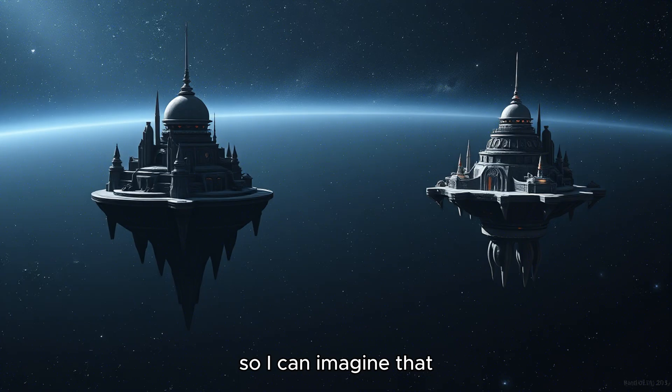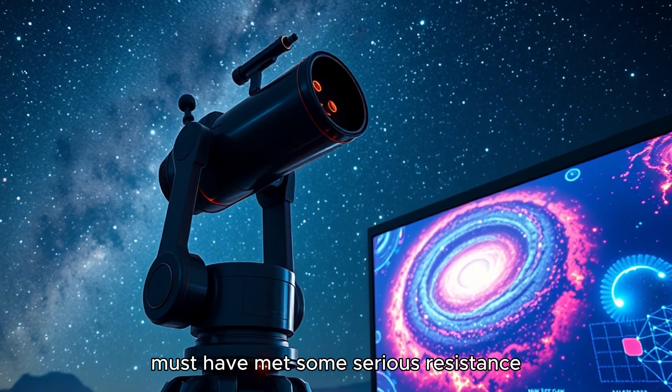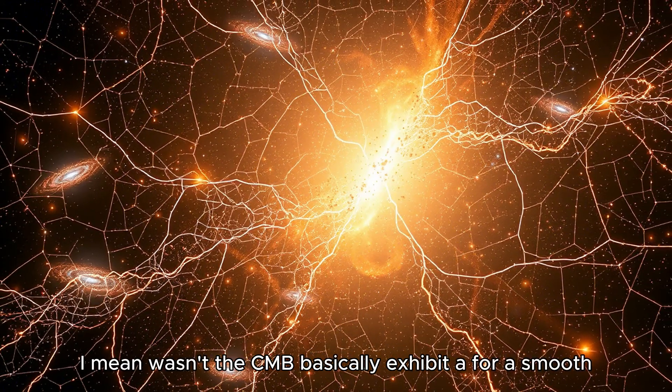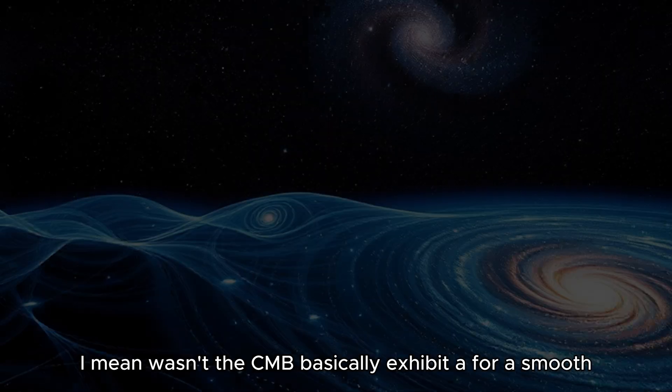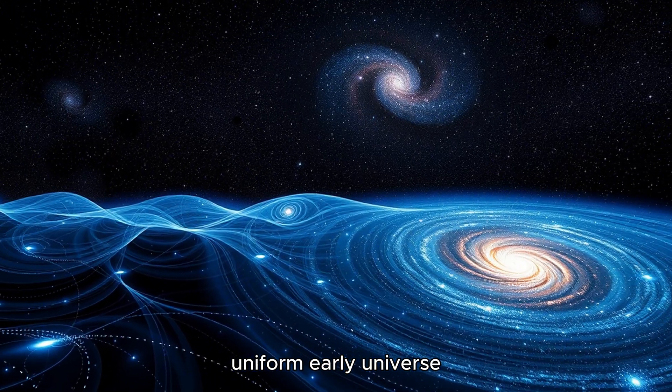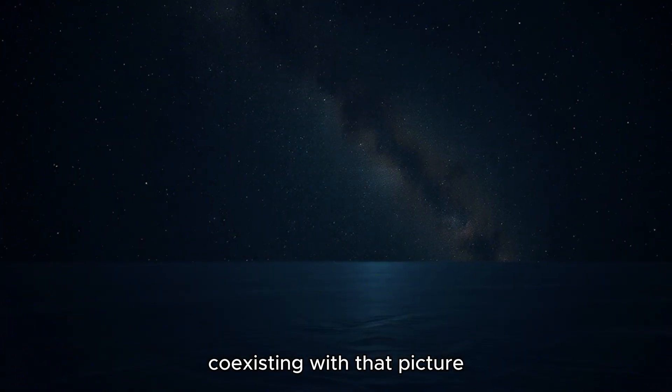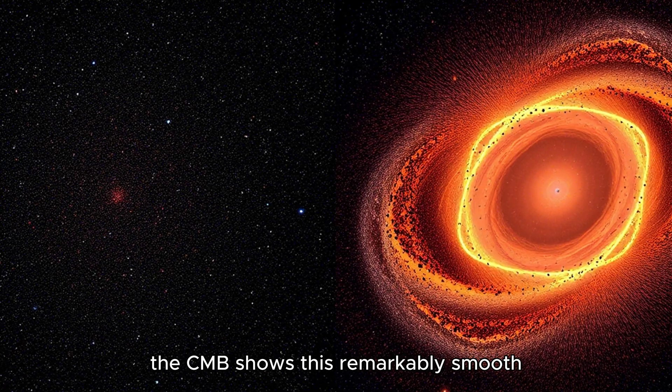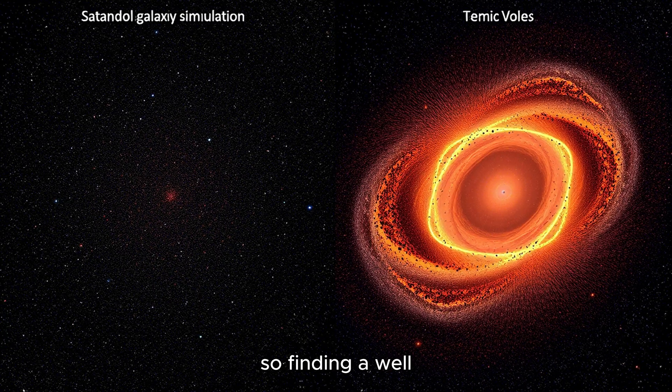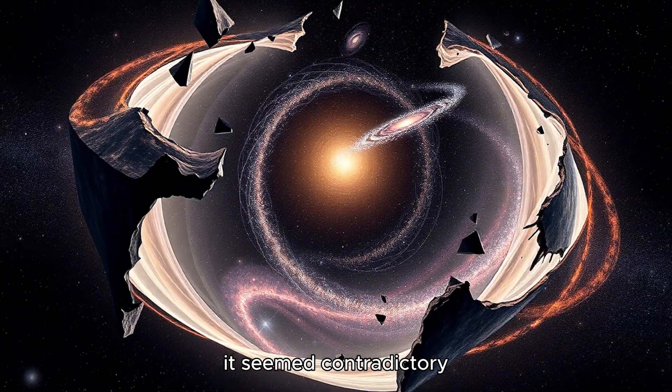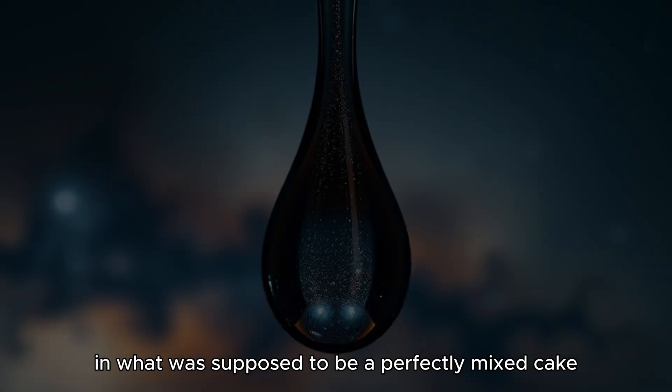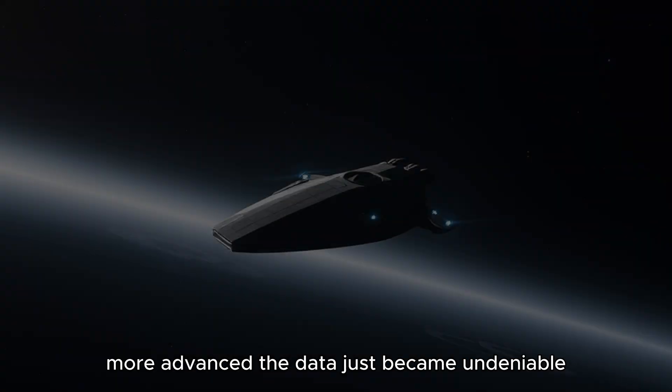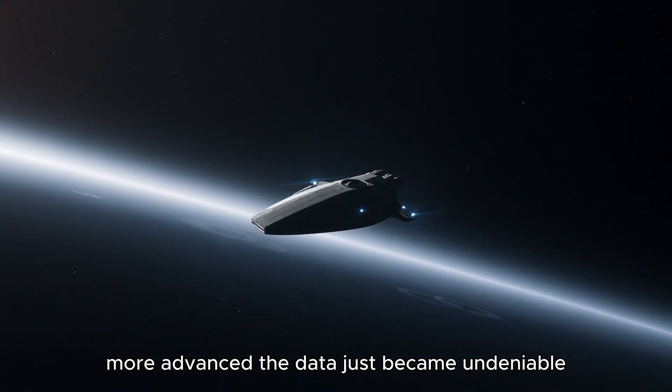So I can imagine that suggesting we live in a giant void must have met some serious resistance, especially with the cosmic microwave background, the CMB. I mean, wasn't the CMB basically exhibit A for a smooth uniform early universe? How could you have this massive hole coexisting with that picture? That was precisely the tension. The CMB shows this remarkably smooth baby picture of the universe. So finding a giant hole in that fabric, it seemed contradictory. It felt like finding a huge air bubble in what was supposed to be a perfectly mixed cake. But as our telescopes got better, more advanced, the data just became undeniable.